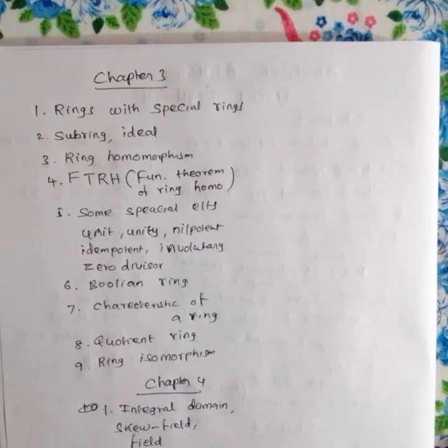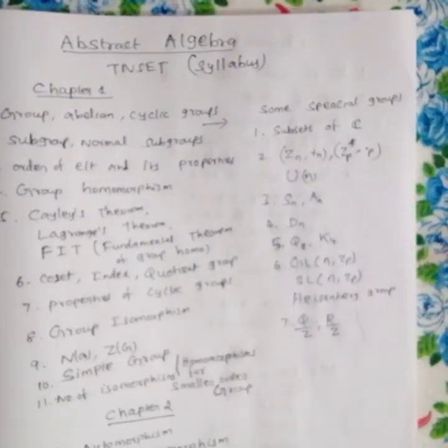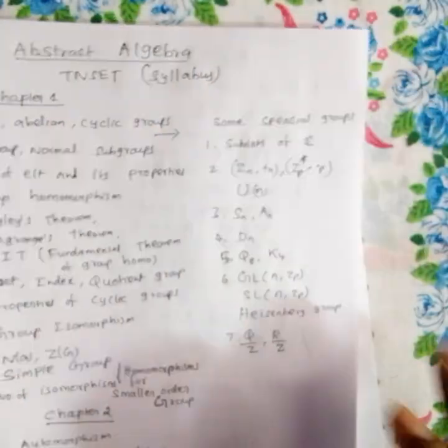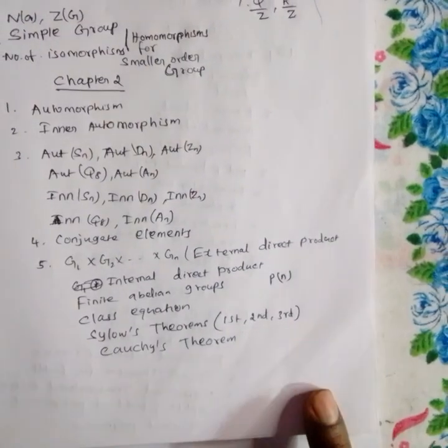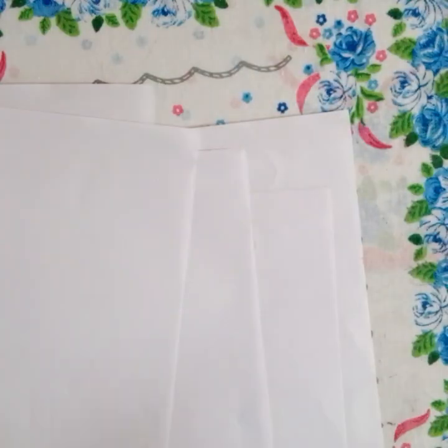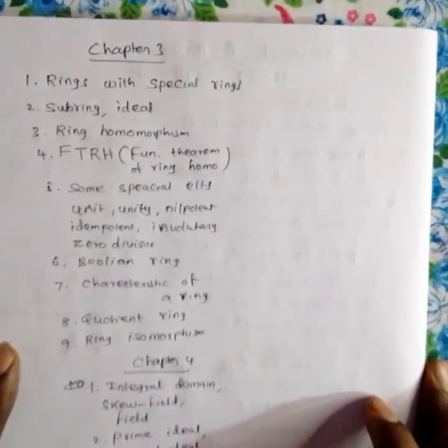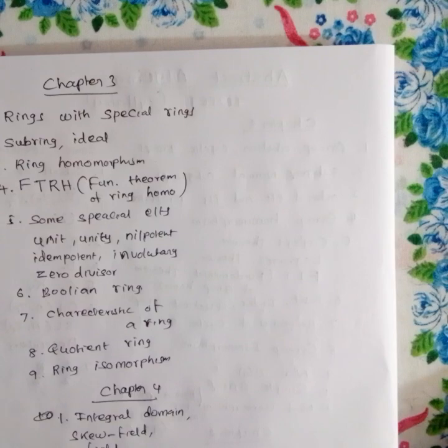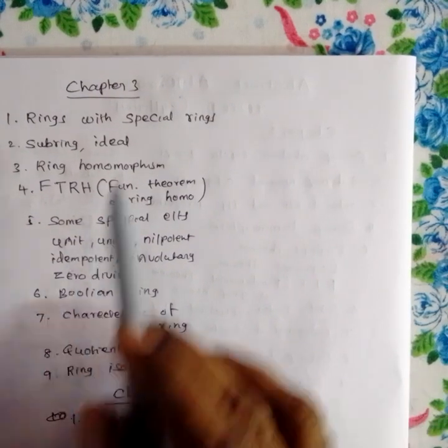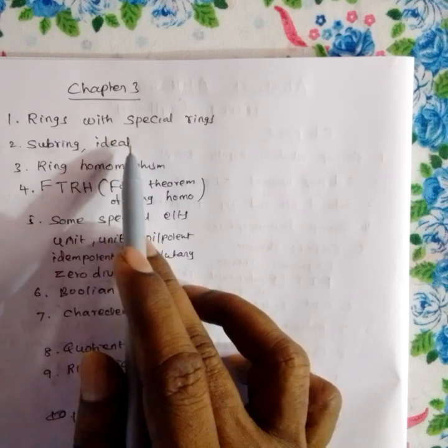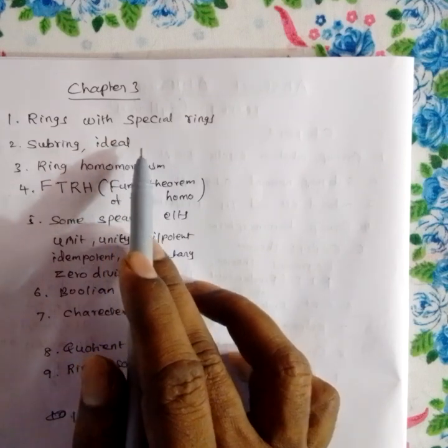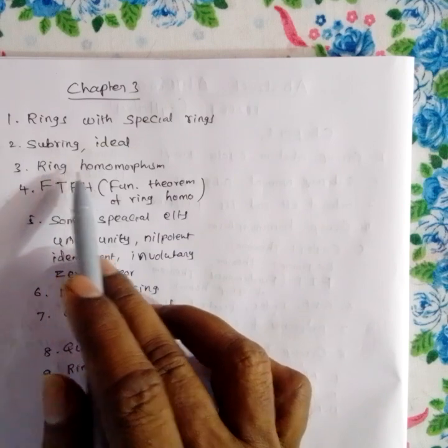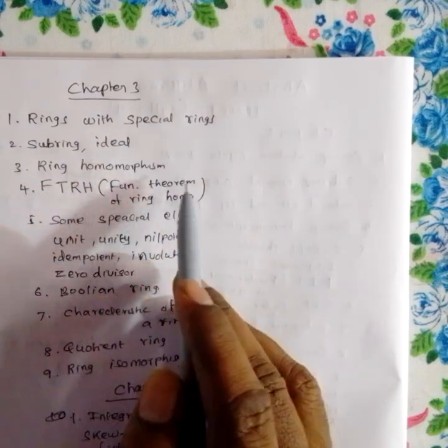Chapter 3 covers ring theory. We will complete the ring chapter. The special rings include subring, ideal, right ideal, and left ideal. The ideal generated by a single element is called a principal ideal. The fundamental theorem of ring homomorphisms is also covered.